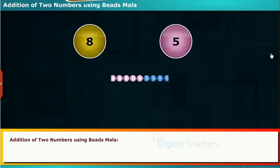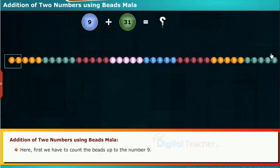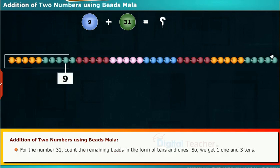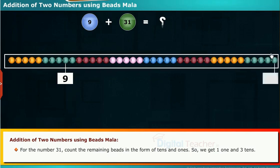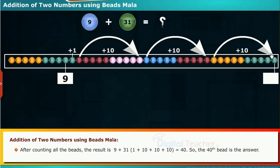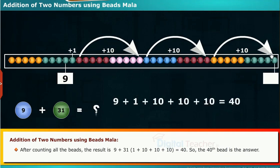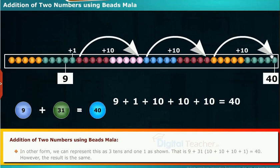Let us see the addition of two numbers using beads Mala. Let us represent the addition of 9 plus 31 using beads Mala. Here, first we have to count the beads up to the number 9. For the number 31, count the remaining beads in the form of 10s and 1s. So, we get 1 and 3 tens. After counting all the beads, the result is 9 plus 1 plus 10 plus 10 plus 10, which is equal to 40.